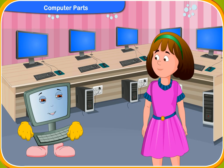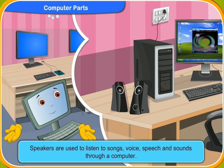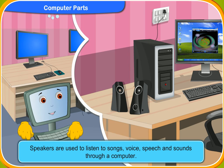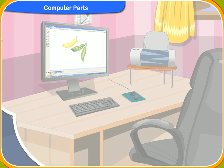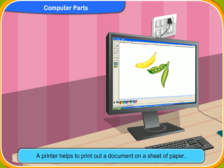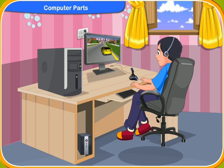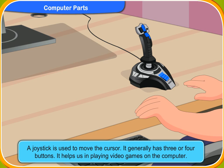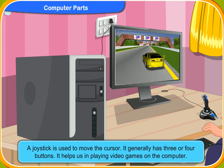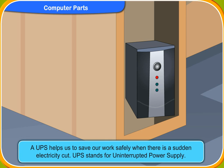Tell me more about them. Speakers are used to listen to songs, voice, speech and sounds through a computer. A printer helps to print out documents on a sheet of paper. A joystick is used to move the cursor. It generally has three or four buttons and helps us in playing video games on the computer. A UPS helps us to save our work safely when there is a sudden electricity cut. UPS stands for Uninterrupted Power Supply.